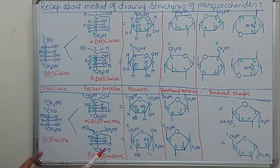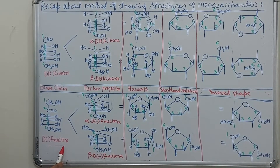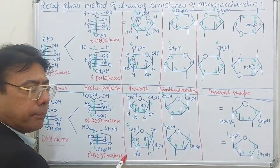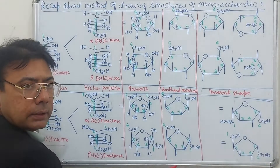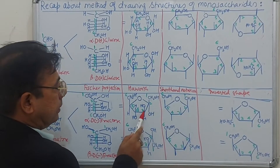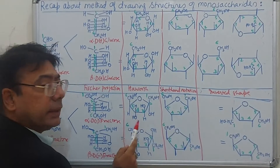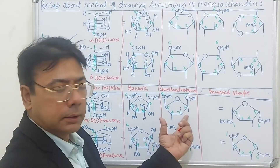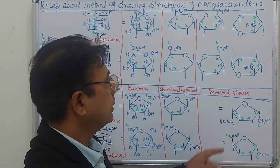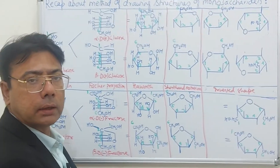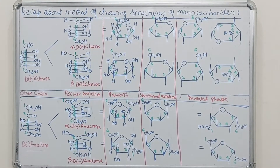Applying the same to fructose, which forms a furanose ring: here is D-fructose in open chain structure, and this is the Fischer representation. The same is represented in Haworth structure, and this is the shorthand notation of fructose structures — wherever there is an OH we draw a line on that side, and where there is H we don't draw any line. On inverting this structure, the fructose ring in inverted pattern looks like this. Students, keep this handy and refer to it whenever you are viewing any oligosaccharide or polysaccharide structure.